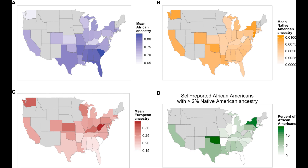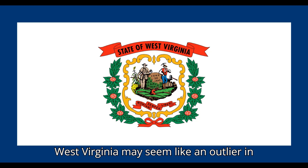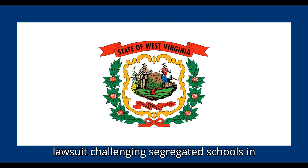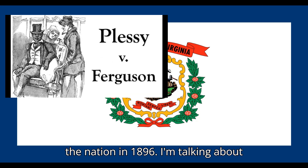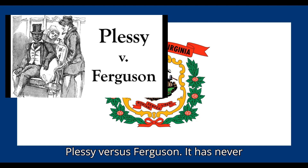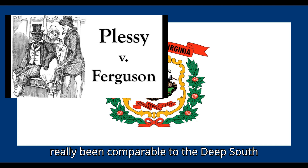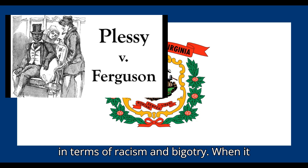West Virginia may seem like an outlier in this case, as it is a southern state, but keep in mind that this state has historically been a stronghold for abolitionists and civil rights advocates. The state had the first successful lawsuit challenging segregated schools in the nation in 1896. It has never really been comparable to the Deep South in terms of racism and bigotry.